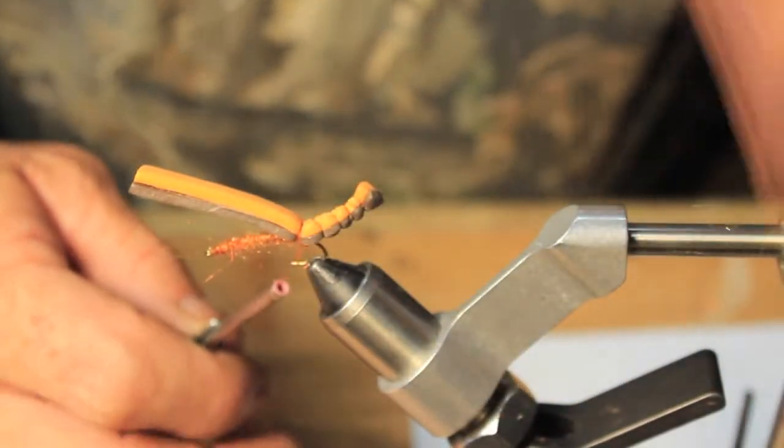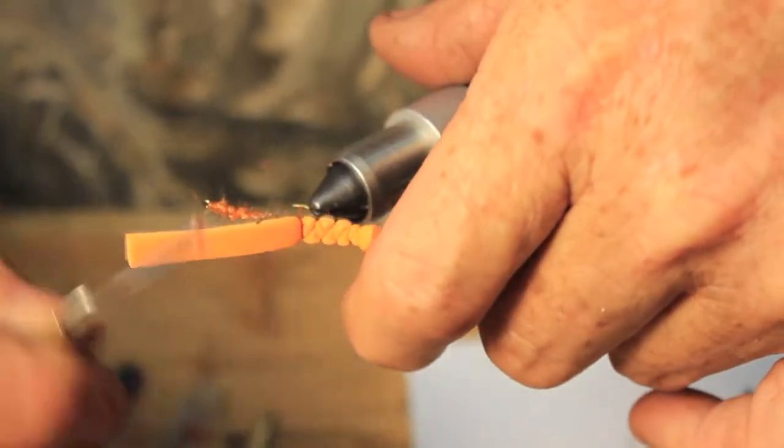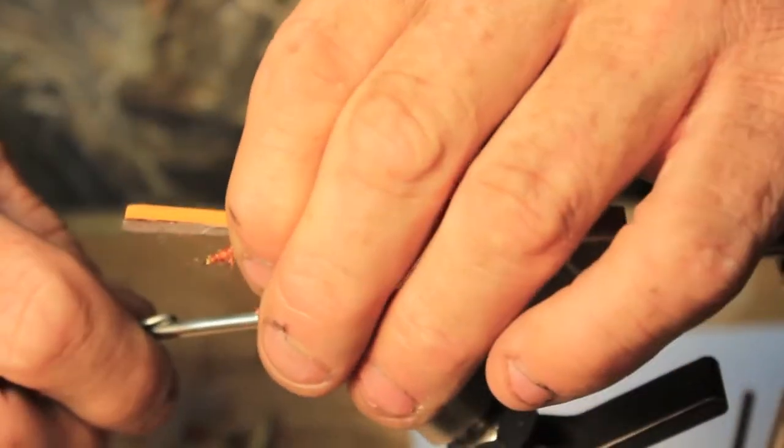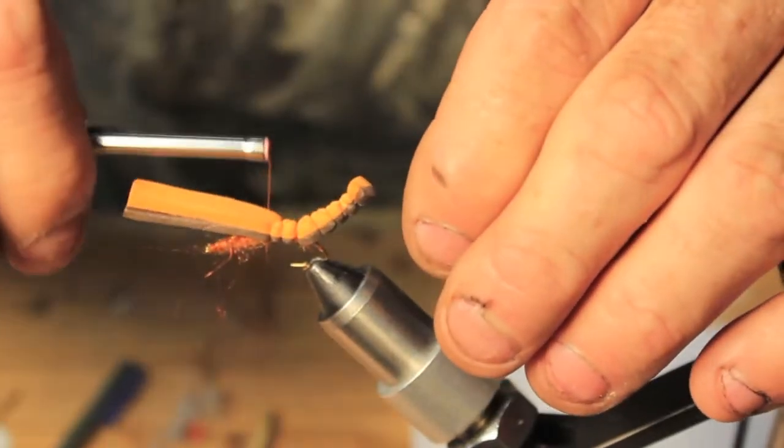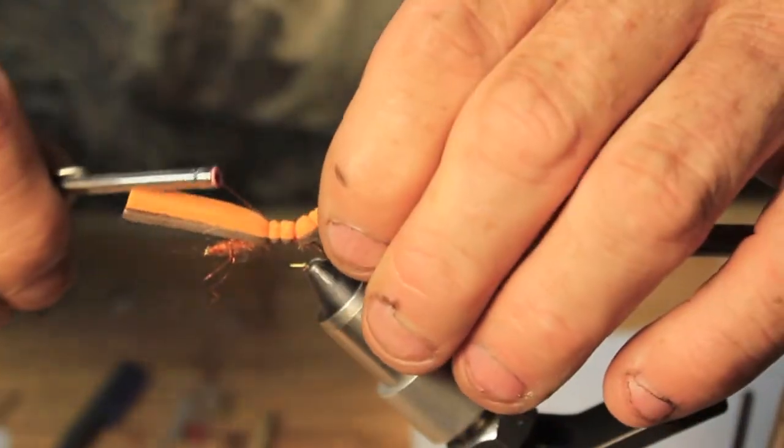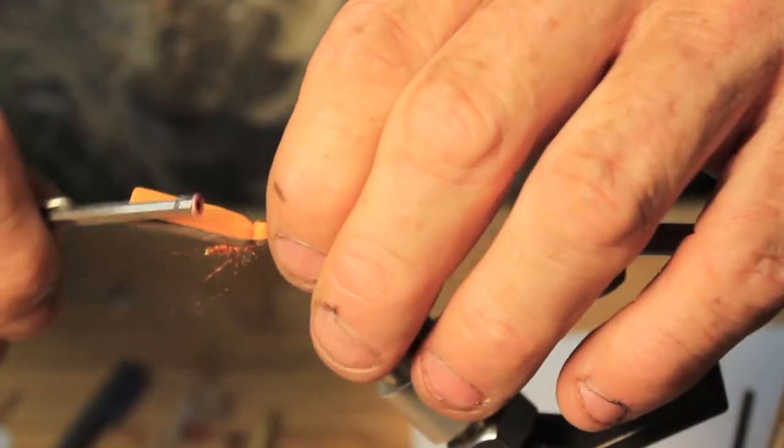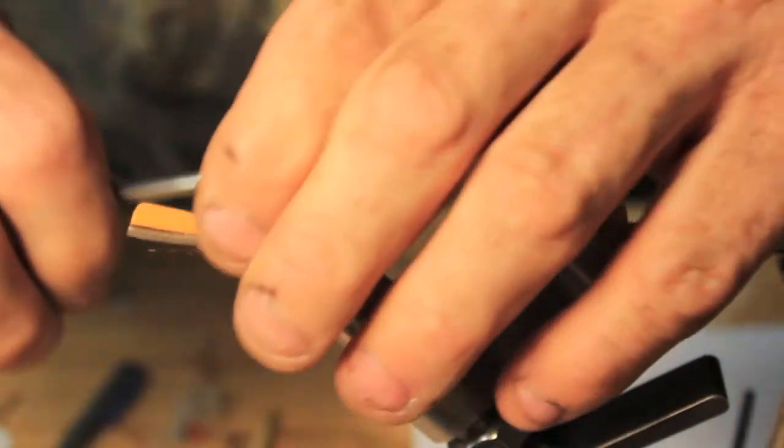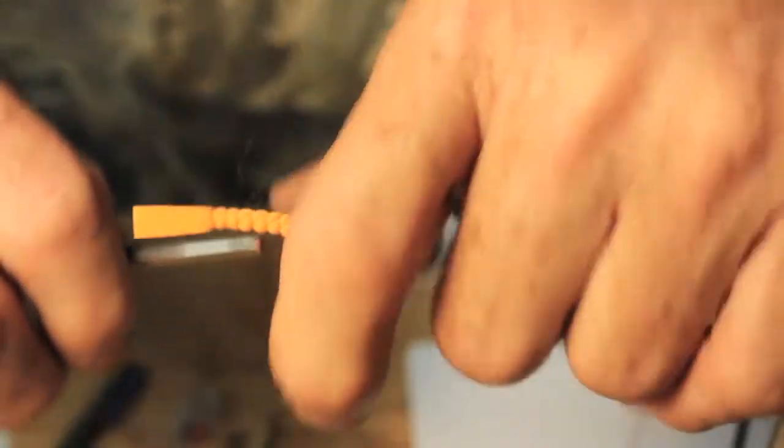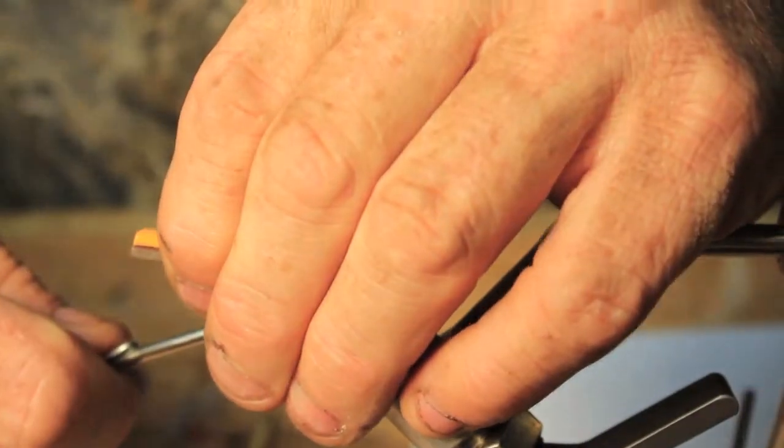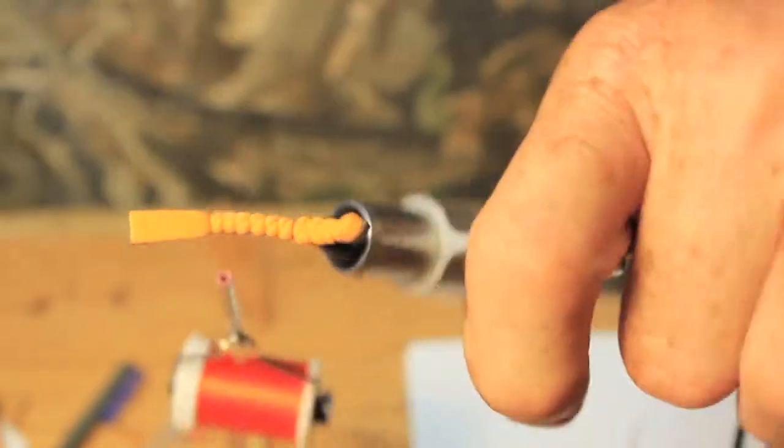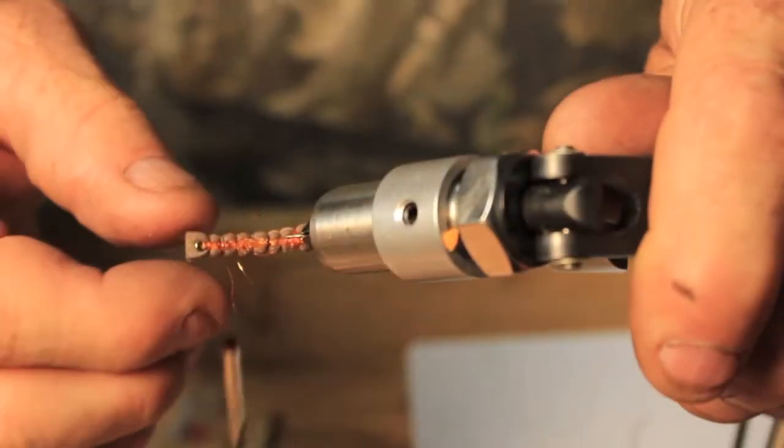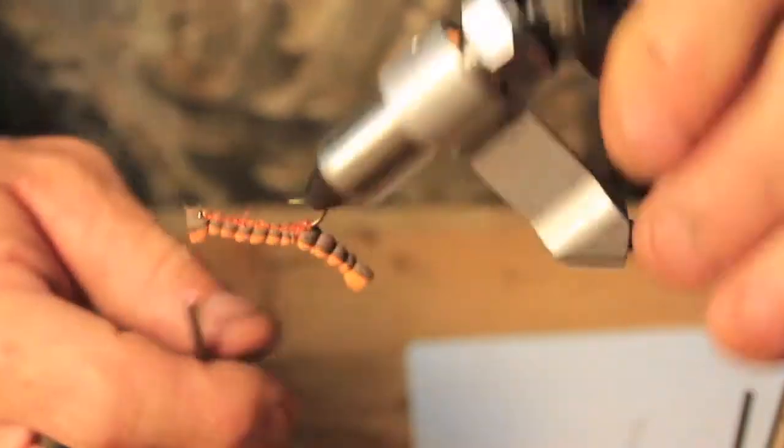Don't worry about the foam moving around on you at this point, because once we get it tied down to the dubbing it'll firm up. Then same thing going forward—you're just going to go up, take a bite, create another segment, take a bite, create another segment. Now we're right at the head, so we're just going to take a couple extra wraps. Then we're going to snip off this head just a little bit in front of the eye, maybe shy of an eighth of an inch. So now we've got our head and our body.